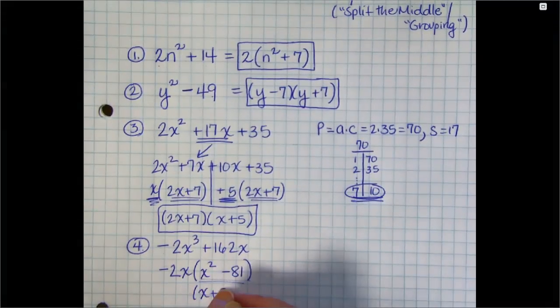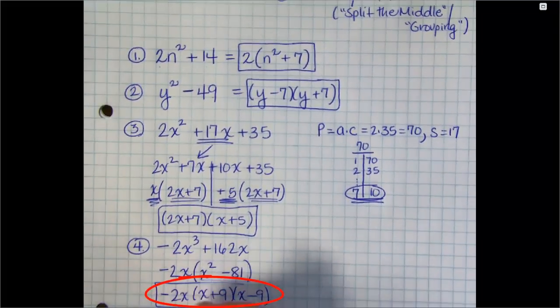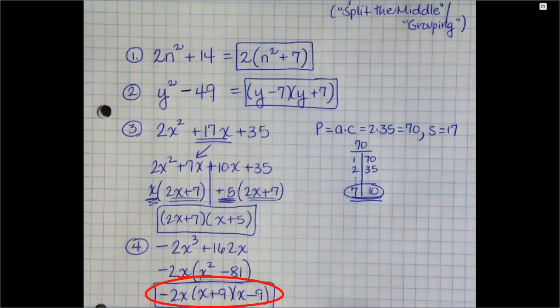x squared minus 81 is the difference of two perfect squares, so that should be a quick factor. x plus 9, x minus 9. Keep your common factor out front, and there's your entire expression. Negative 2x times x plus 9 times x minus 9.